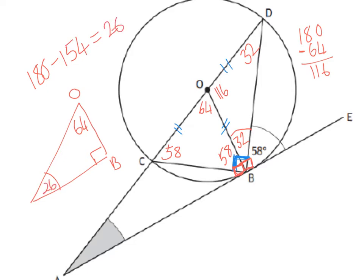So my shaded angle is 26 degrees. That was angle CAB. I'm going to keep going and fill in all the other angles. Using the red 90 down here, that's also 32. Using the isosceles and the other values, there are multiple ways to arrive at angle 26. You don't need to necessarily fill in absolutely every angle.